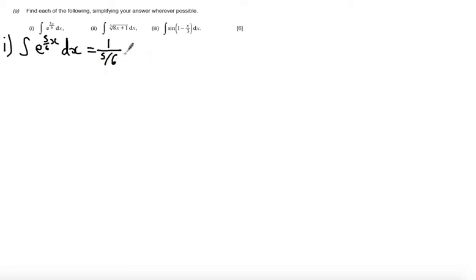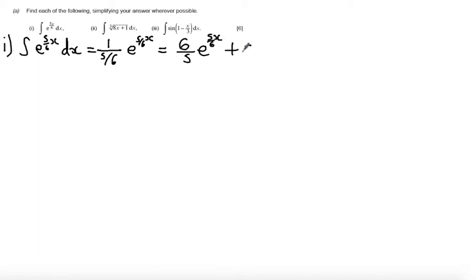Then I'm going to integrate the outside function. e to the 5 over 6x integrates to e to the 5 over 6x. Tidying this up, I get 6 over 5 times e to the 5 over 6x, and then remember to add the constant of integration.